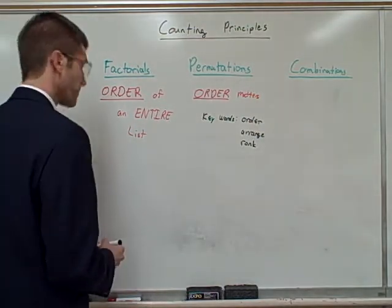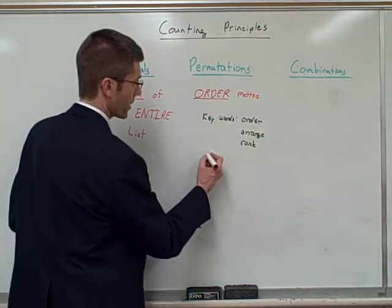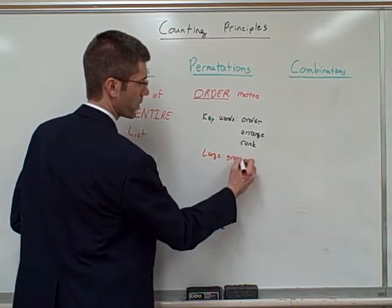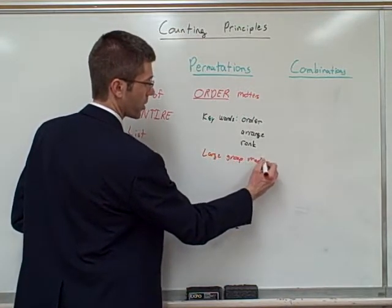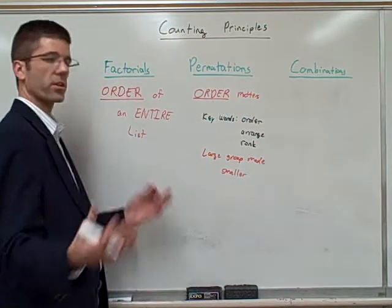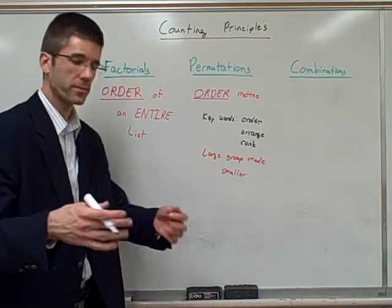For combinations, let's go back, let's go back. For permutations, this is a large group made smaller. 20 people in a race. We want to know how the top three finished. 20 became three. Okay.